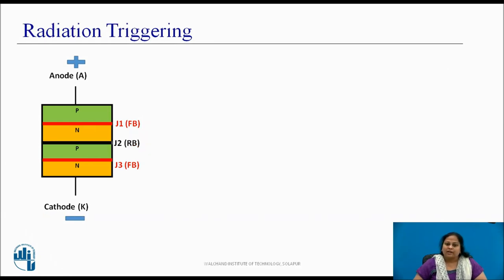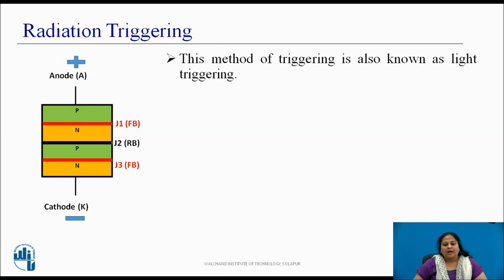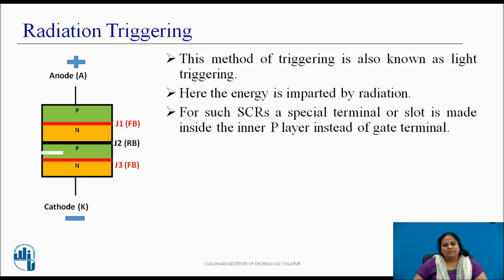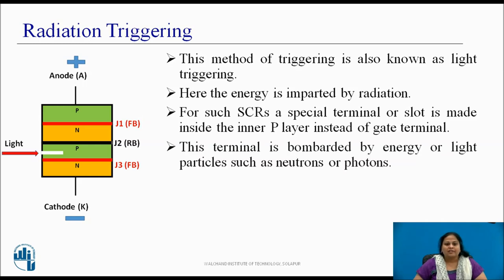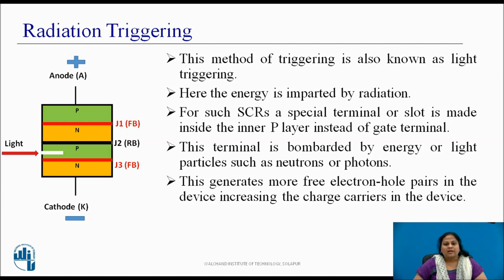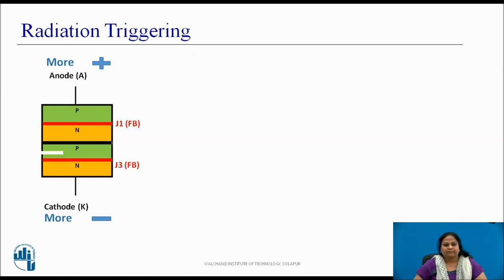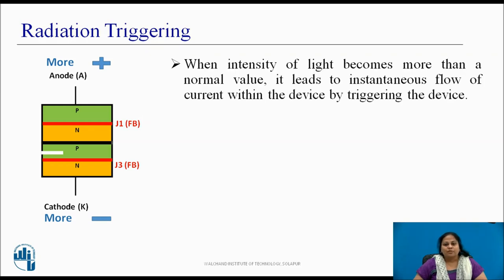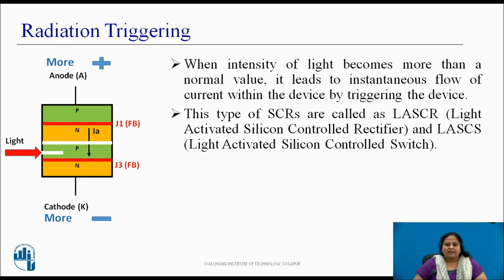Another triggering method uses radiation, also known as light triggering. In this, energy is imparted by radiation or light. To use this method, SCRs are made having a special terminal or slot inside the inner P layer instead of a gate terminal. Through this slot, light particles such as high-energy photons and neutrons are bombarded inside the SCR. This generates more free electron-hole pairs in the device, increasing the charge carriers. As the intensity of light becomes more than a normal value, it makes instantaneous current flow through the device, triggering it ON.